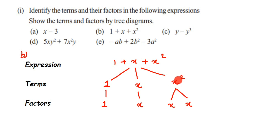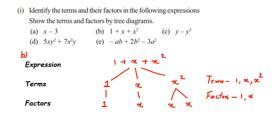Let's write down the terms and factors. There are three terms in the second question: one is 1, second is x, and third is x square. For factors: the first term's factor is 1 itself; for the second it is x; and for the third it is x and x — two factors x and x.